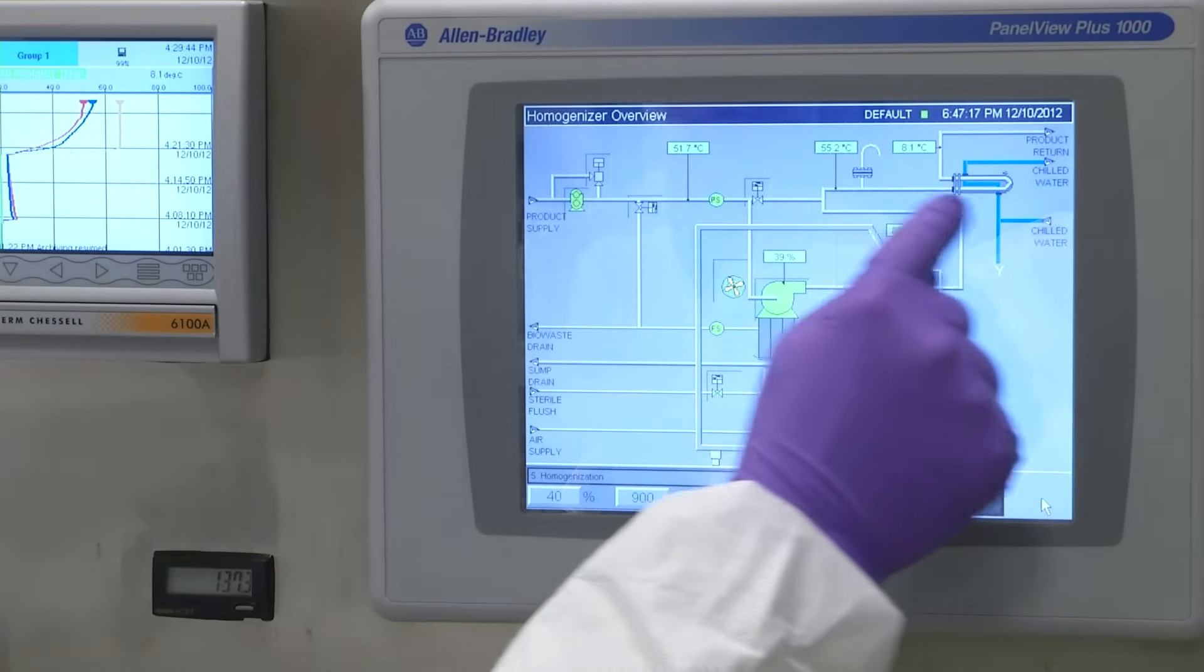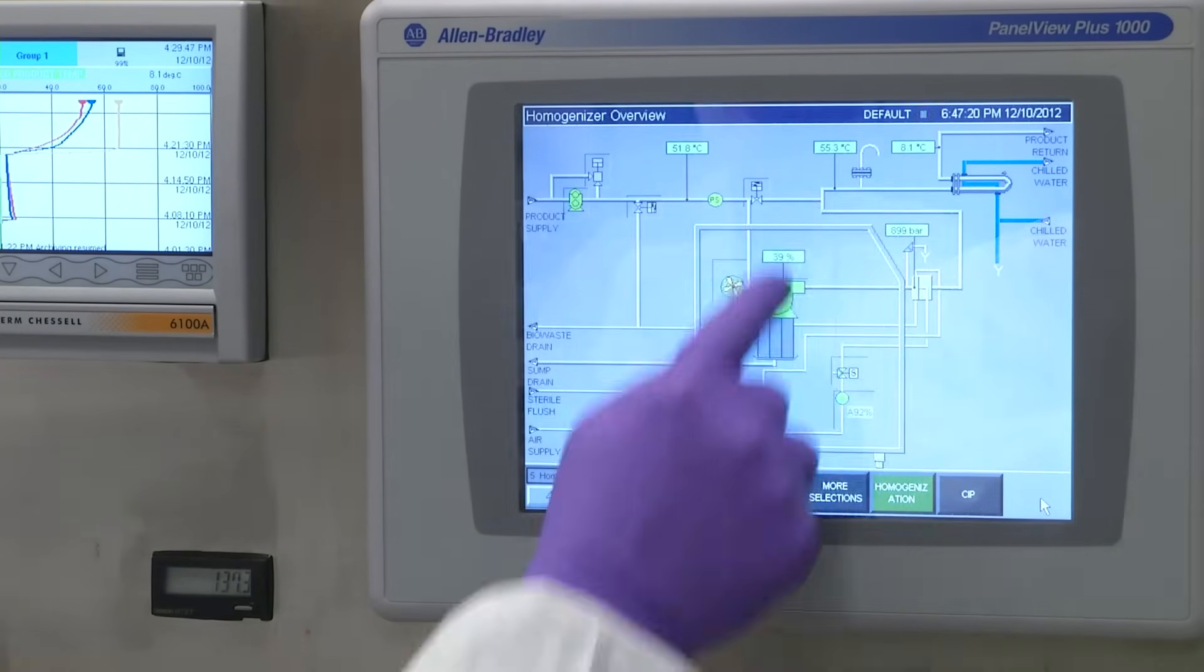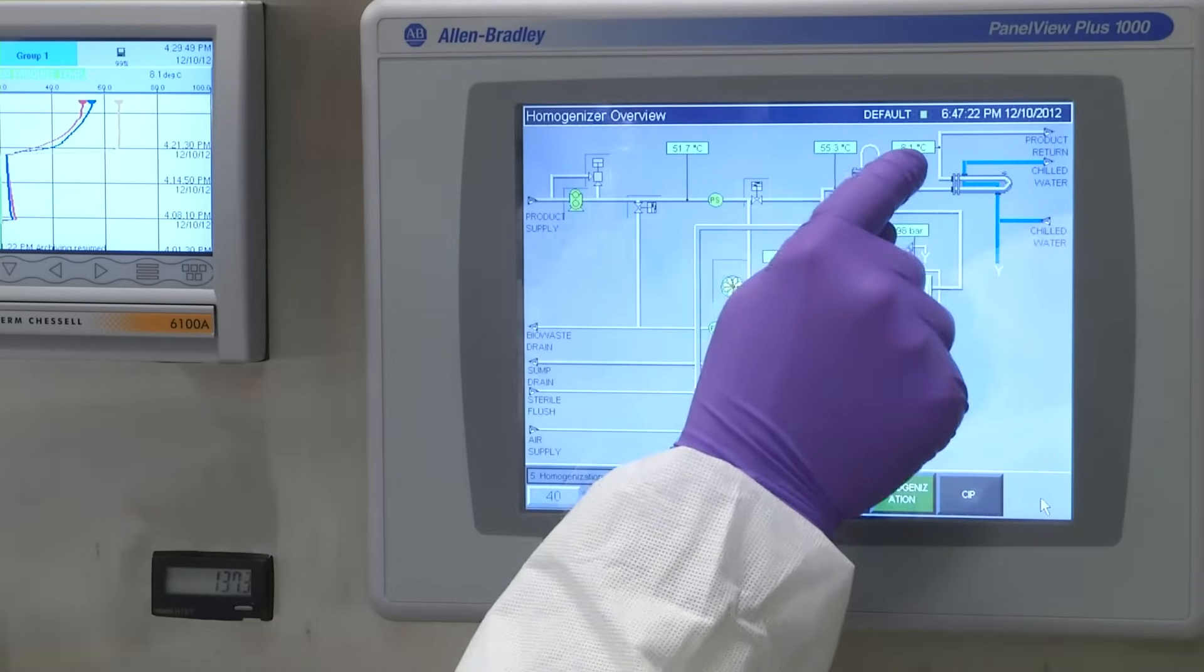And to ensure that all the E. coli cells are ruptured, the solution is cycled through the homogenizer a second time.